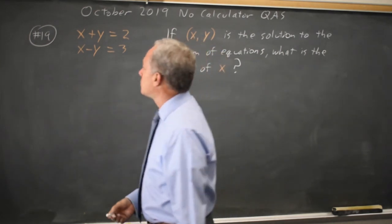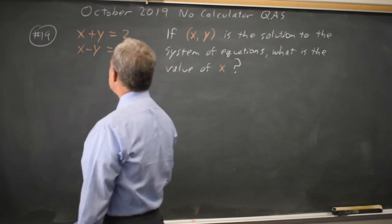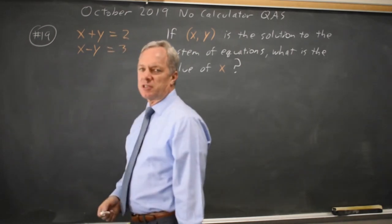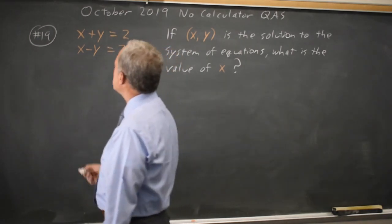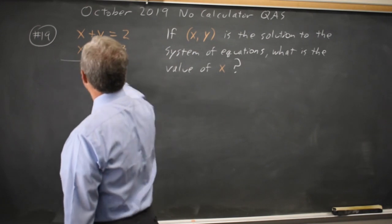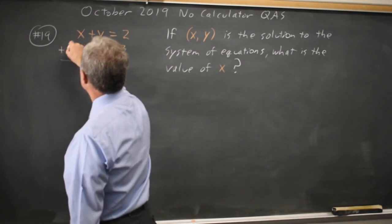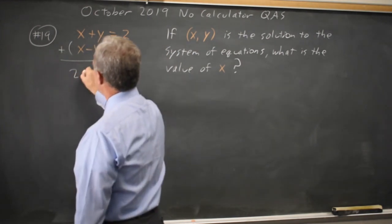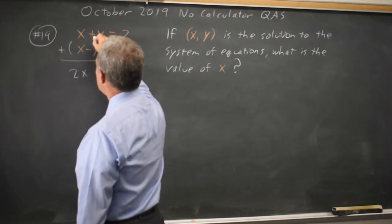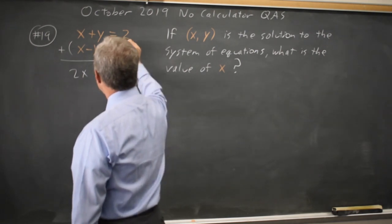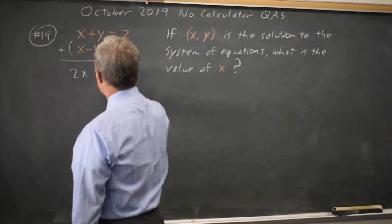Add the two equations — in general, add a multiple of one equation to the other. In this case, if we add the two equations: x plus x is 2x, y plus negative y is 0y, and 2 plus 3 is 5.